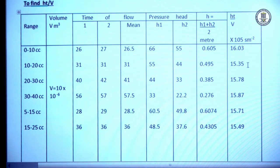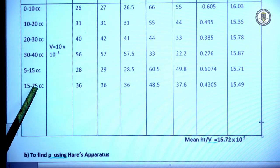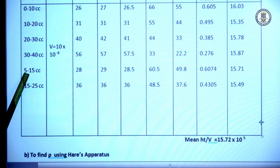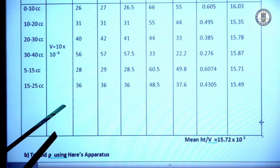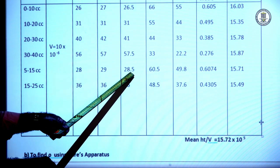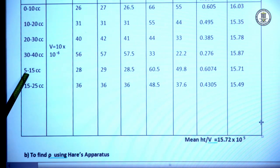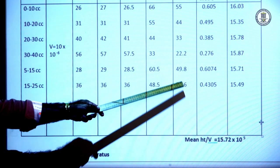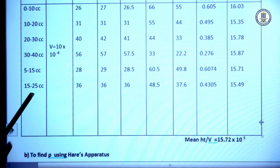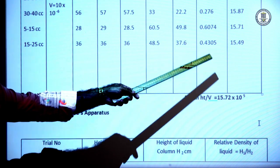For range 10 to 20, the time, H1, H2, and H values are obtained, giving H·T/V = 15.35. For range 20 to 30, 30 to 40, and an alternate range 5 to 50 (volume still 10 cc), time of flow was 28 s and 29 s, mean 28.5 s. H1 = 60.5 cm (capillary tube to level 5) and H2 = 49.8 cm (capillary tube to level 15). The experiment is repeated for range 15 to 25 similarly.